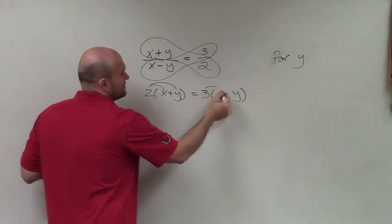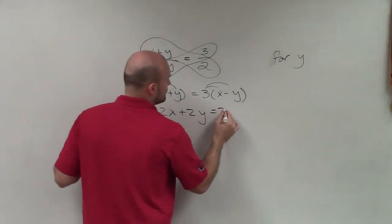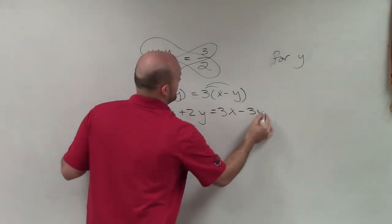So then I can apply the distributive property to now simplify it. So I have 2x plus 2y equals 3x minus 3y.